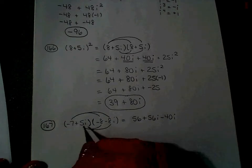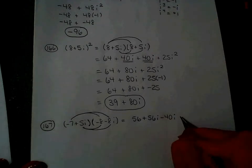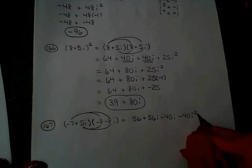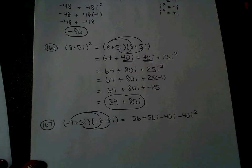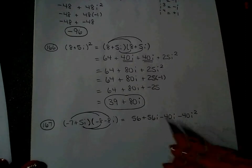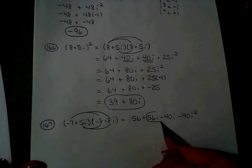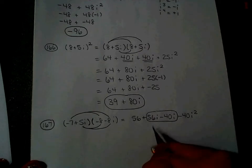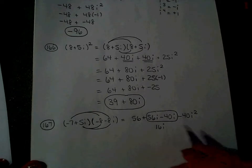Positive times a negative is a negative. i times i is i squared, so that's negative 40i squared. I do like terms. Positive 56i and negative 40i give me 16i. 56 take away 40 is 16.